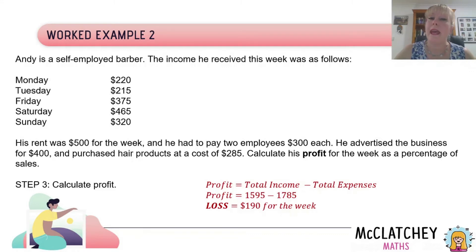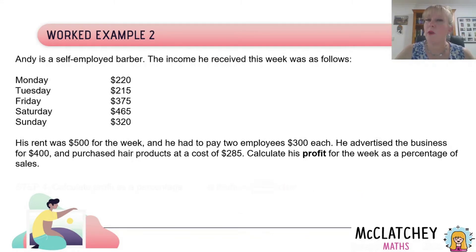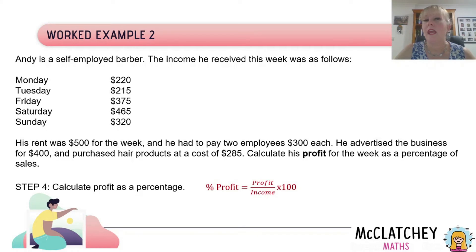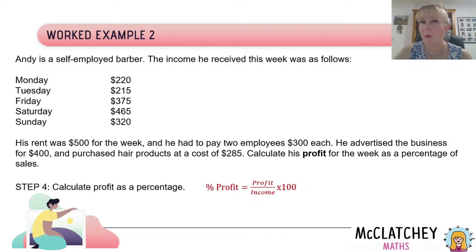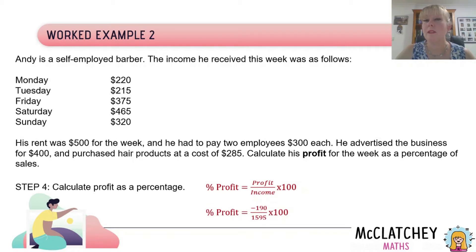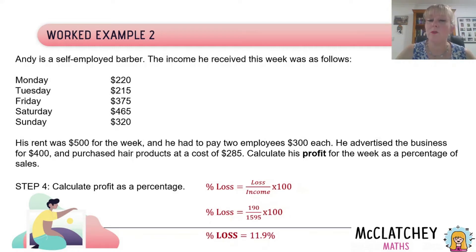We also need to express Andy's loss as a percentage of his total sales. The percentage profit formula is: profit divided by income, multiplied by 100. Substituting: negative $190 divided by $1,595, multiplied by 100 gives negative 11.9%. We can rewrite this as: Andy made a loss of 11.9% of his income. That's not very good at all, Andy!